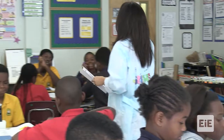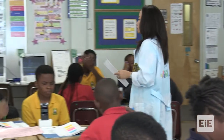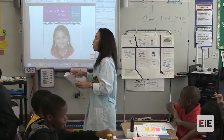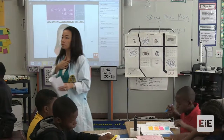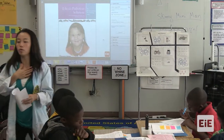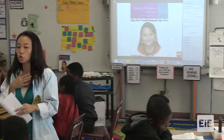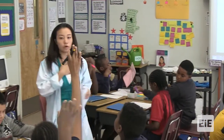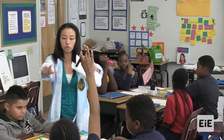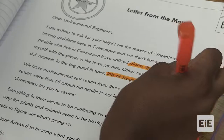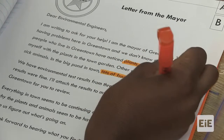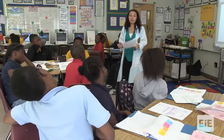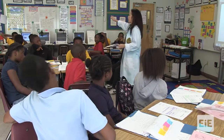Use your highlighter and talk with your group. I want you to highlight what details you see that could help us as environmental engineers — what clues does the letter give us to figure out what the problem is? Why are we being called as environmental engineers? Why are we being asked to come and help?